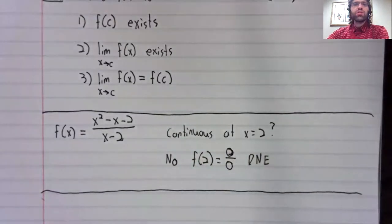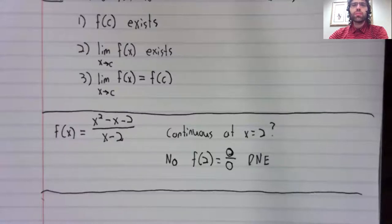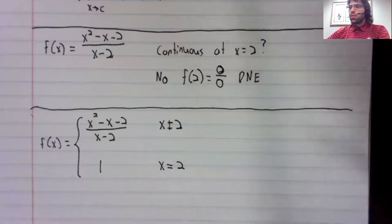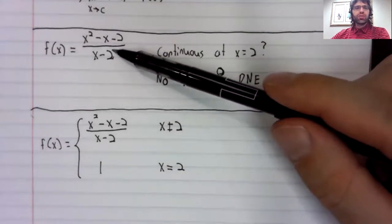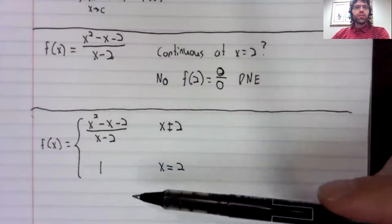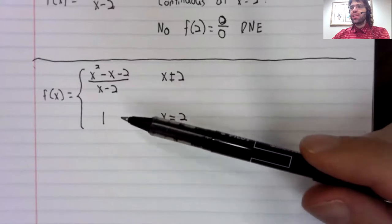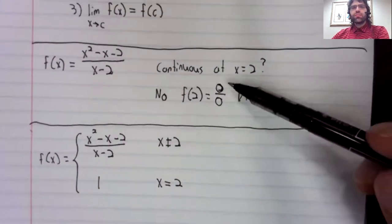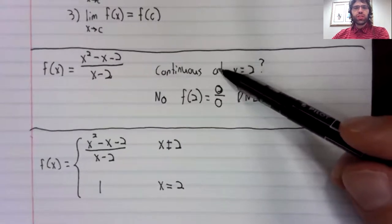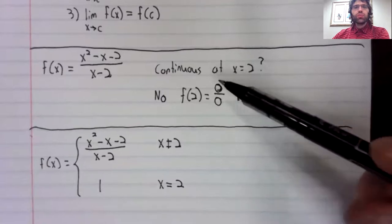Let's take this function and modify it a little. This function wasn't defined at two. So we'll create a function that is. And now we'll ask the same question. Is this continuous at two?